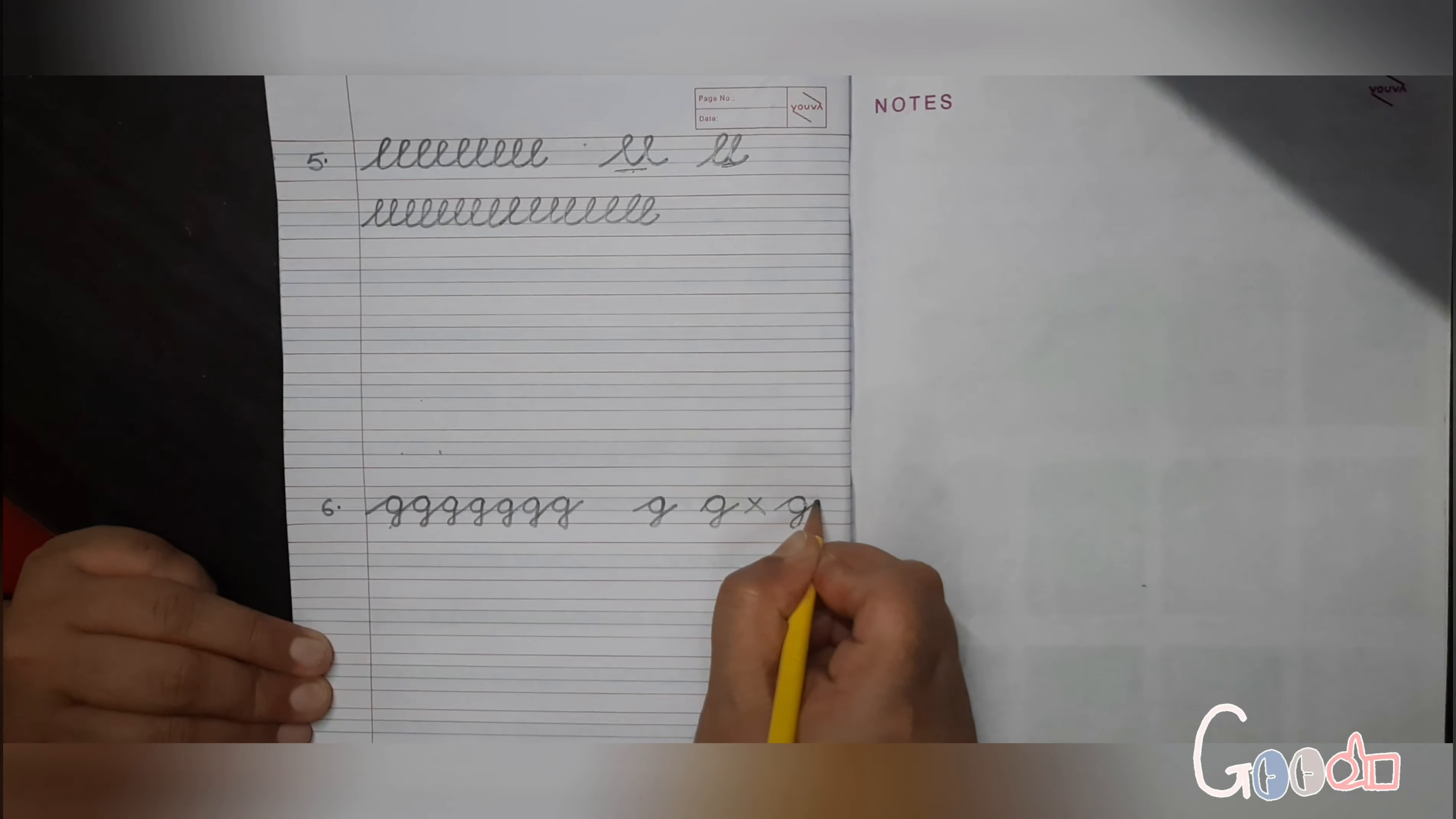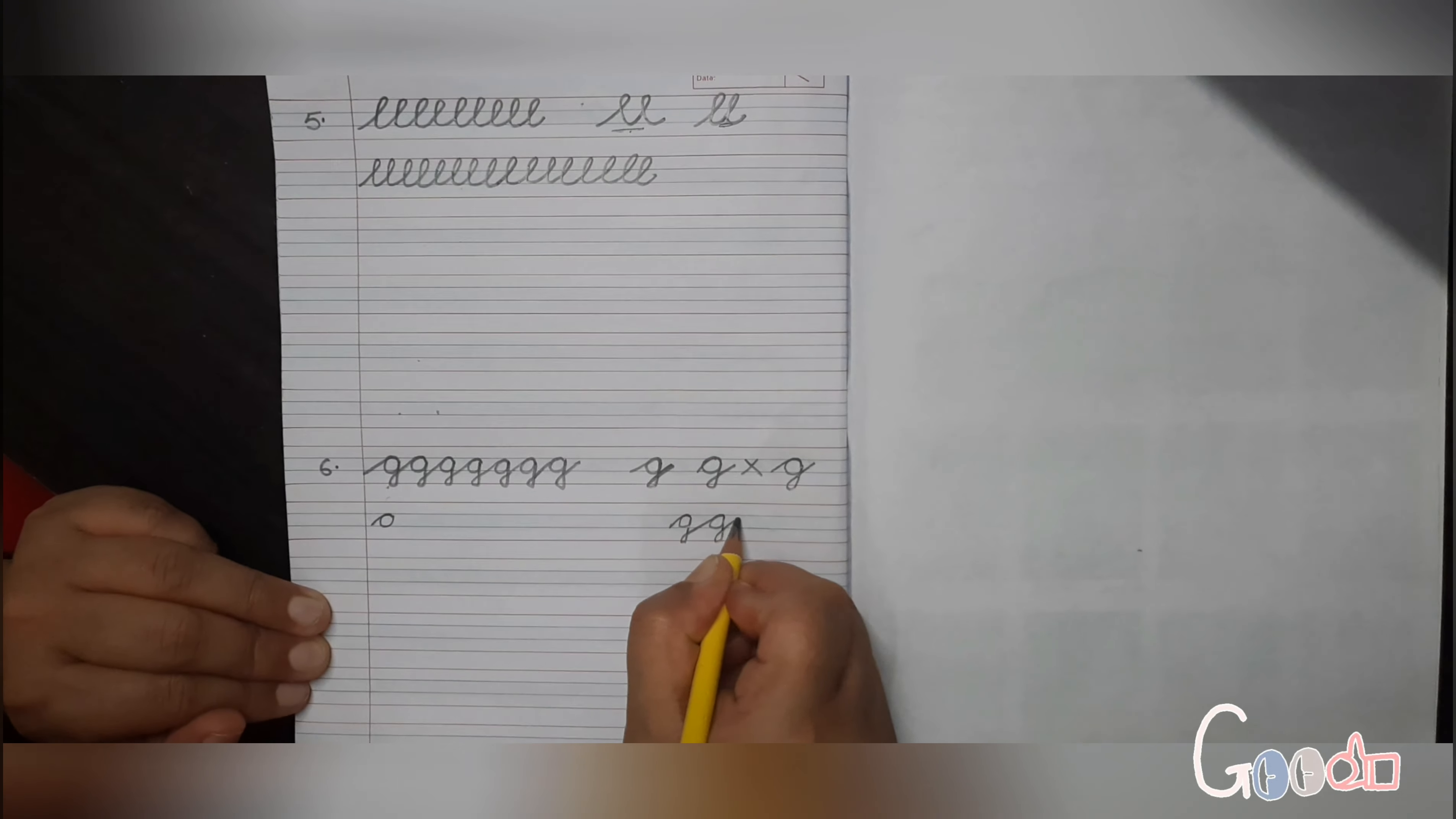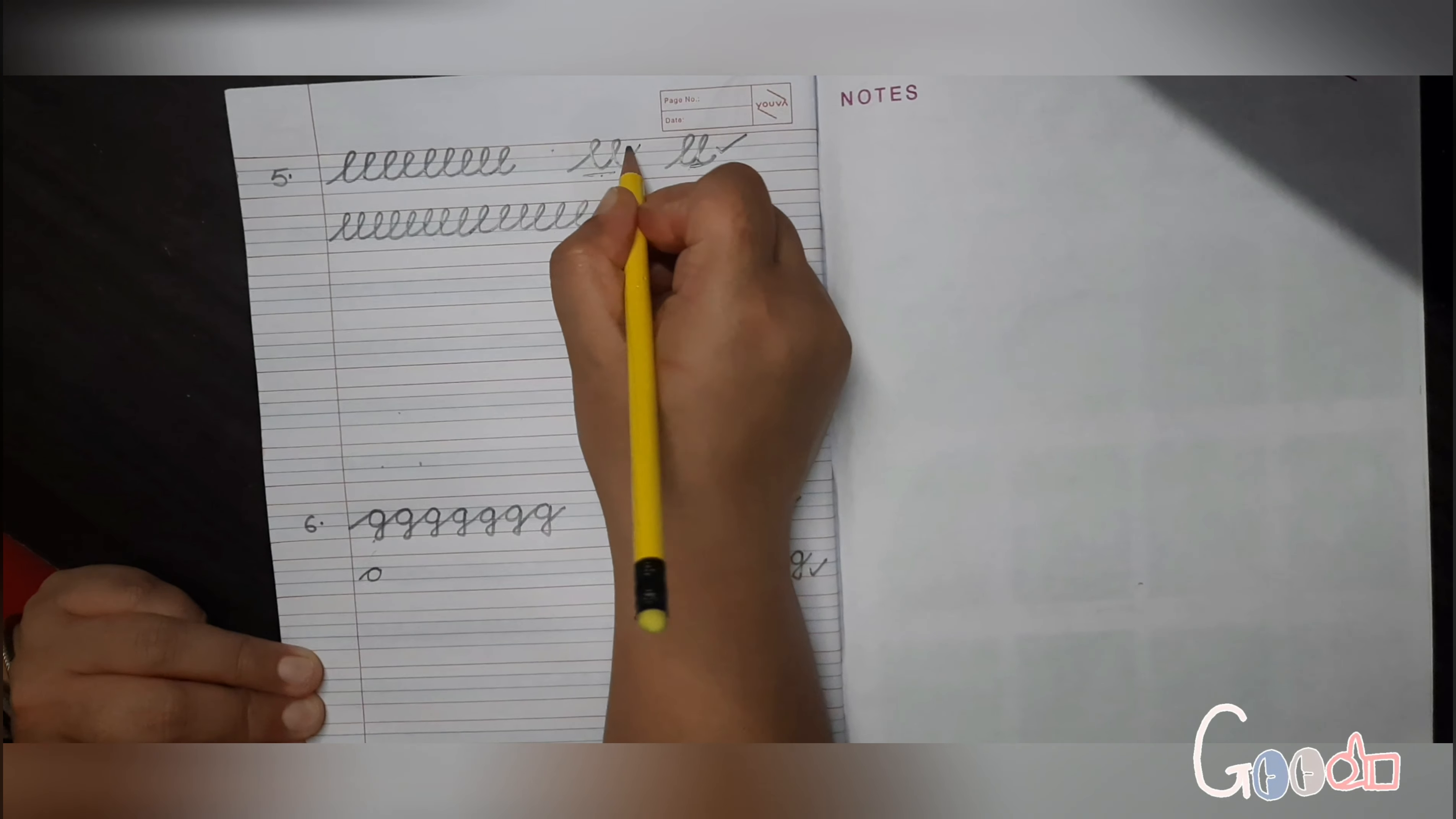And one more thing: take this cut near the neck of the G. Don't take it before like this. Bring it near to its neck this way. So this is wrong and this is right. Similarly, this is right and this is wrong.